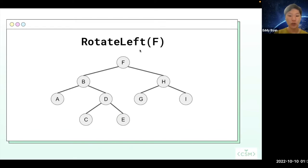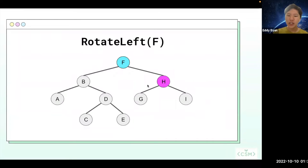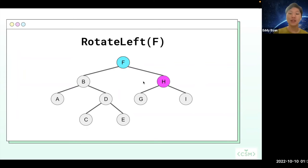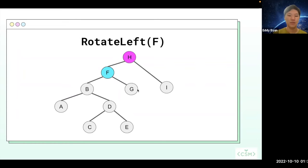Suppose I have this tree and I call rotate left on f. What it's going to do is we're going to get the right child of f, which is h, and we're going to make f the left child of h. But notice that g is currently the left child of h. What's going to happen to g? Well, notice that g is in the right subtree of f, and when we rotate f to the left, f is not going to have a right child, and we can just stick g as f's right child. And because g is already in the right subtree of f, we know that g is going to be greater than f, so this is a safe operation. So this is what the tree looks like when we rotate left on f.